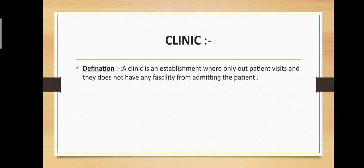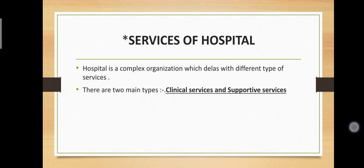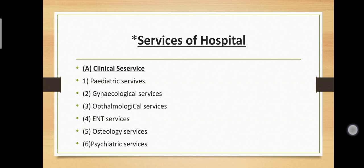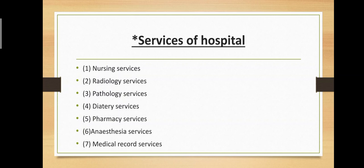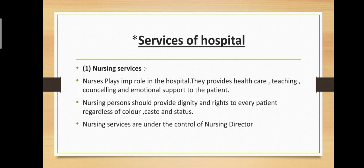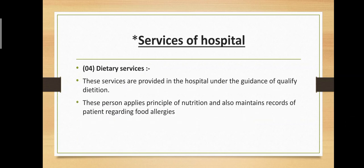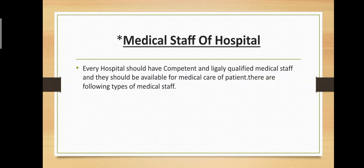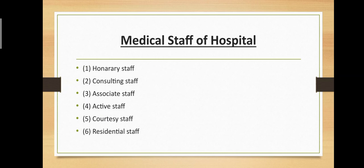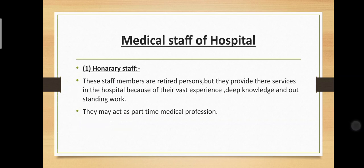Miscellaneous: teaching hospital where medical college and hospital are connected. Definition of clinic. Services of hospital: two main types — clinical services (pediatric, gynecological, ophthalmological, ENT, osteology, psychiatric) and supportive services (nursing, radiology, pathology, dietary, pharmacy, anesthesia, medical record services). Medical staff of hospital: six types — honorary, consulting, associate, active, courtesy, and residential staff.